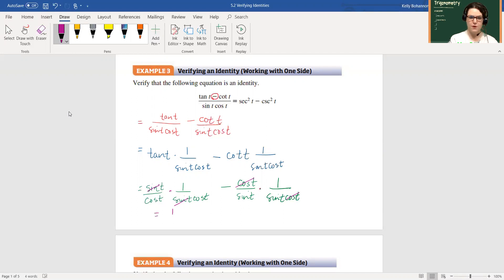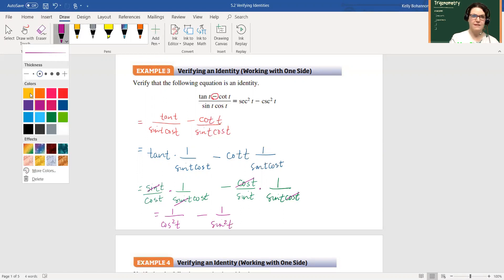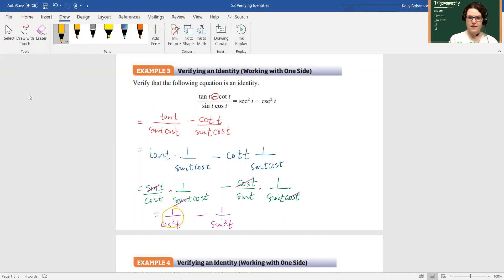So if I re-multiply this, I end up with one over cosine squared t minus one over sine squared t. And then using my reciprocal identities, that gets me to one over cosine squared t is secant squared t minus one over sine squared t is cosecant squared t.